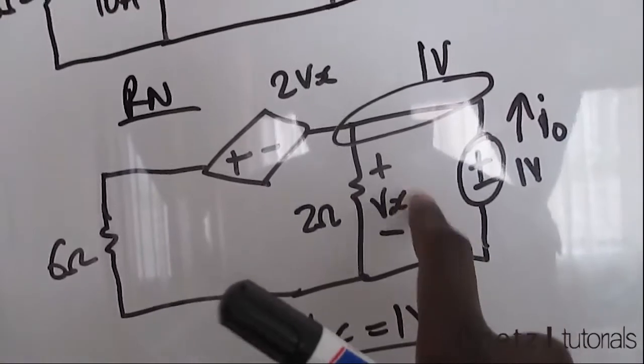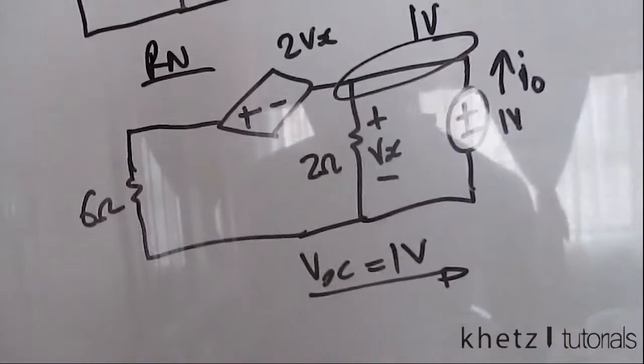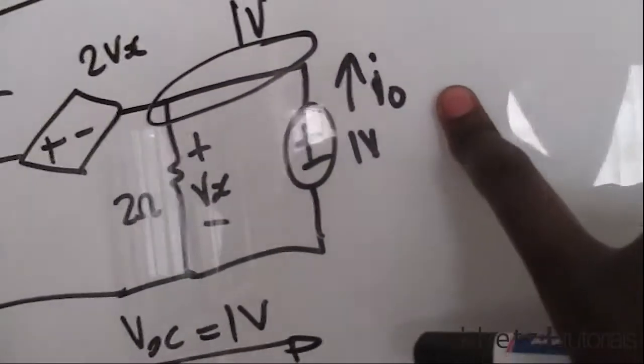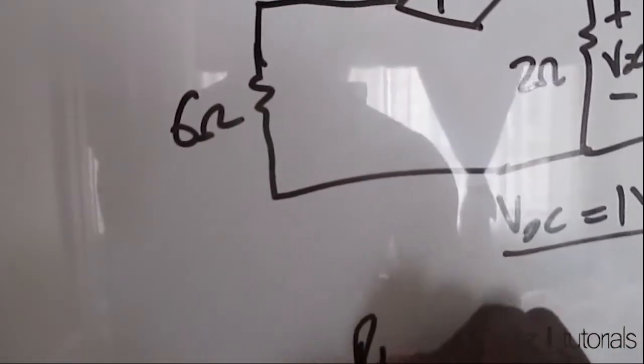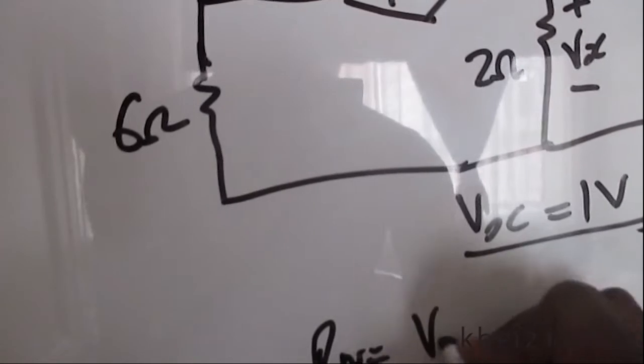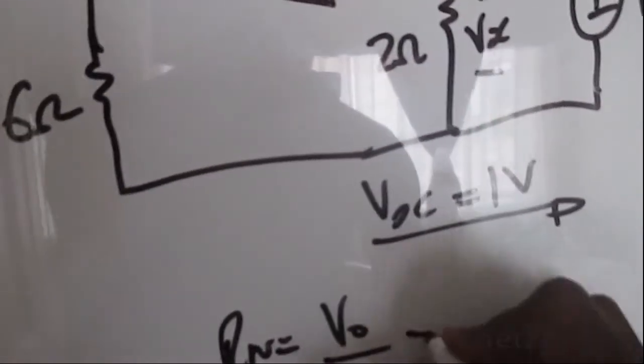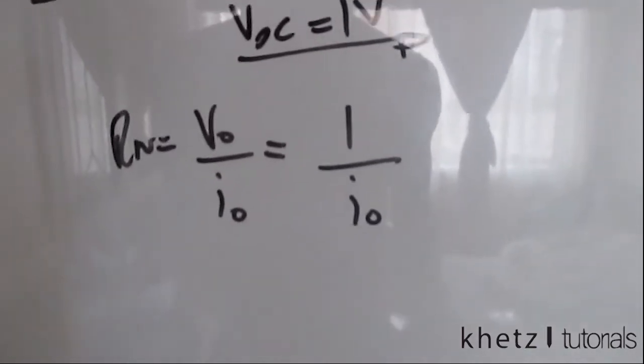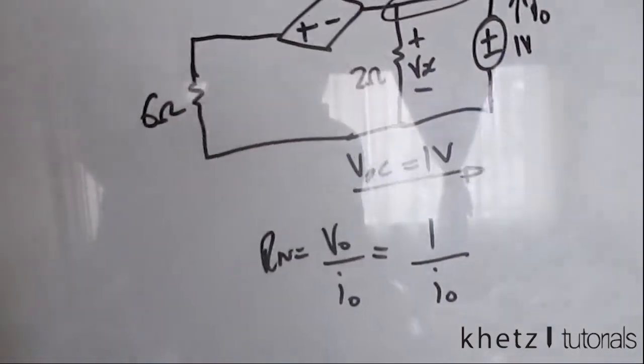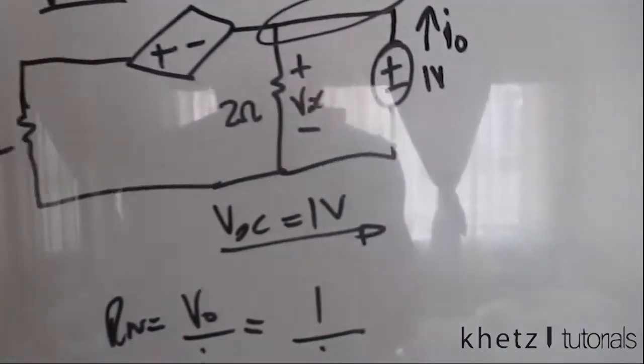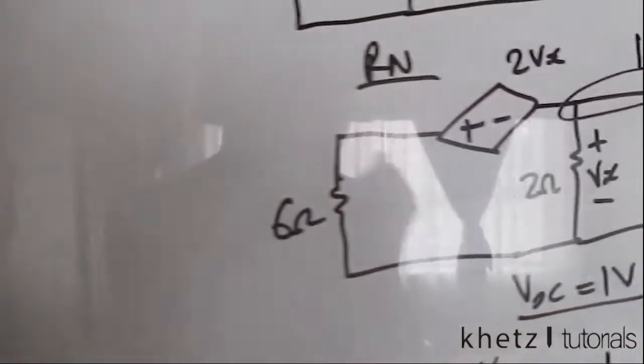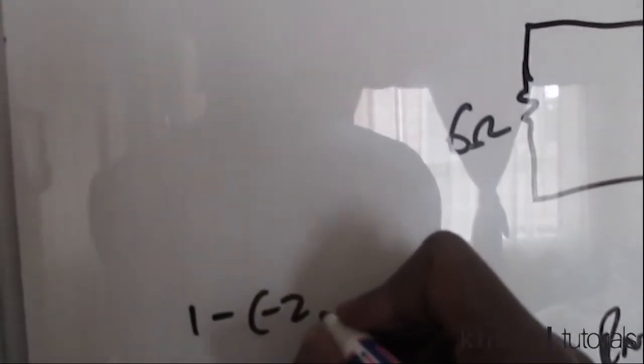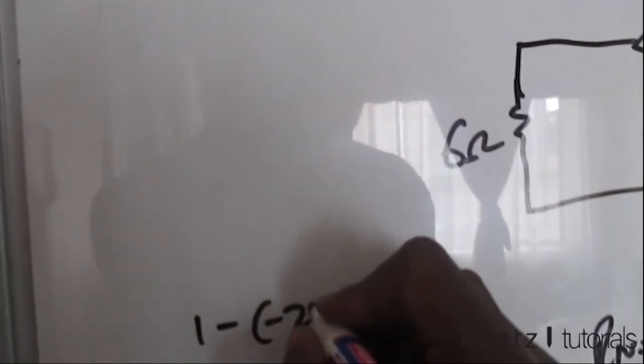Now I can substitute the one everywhere. We are interested in finding the value of Io because Rn equals Vo, which is our test, divided by Io. Our test is one, so this should be our Rn. Let's proceed to find Io. We are going to use nodal analysis. Using nodal analysis, we say one minus negative 2Vx, so Vx is one, so that's going to be two.